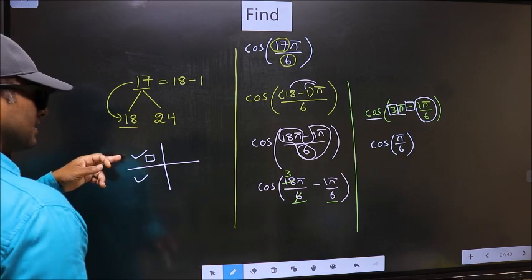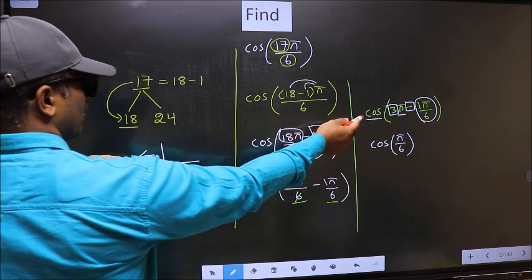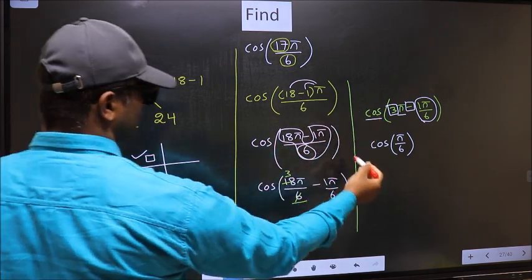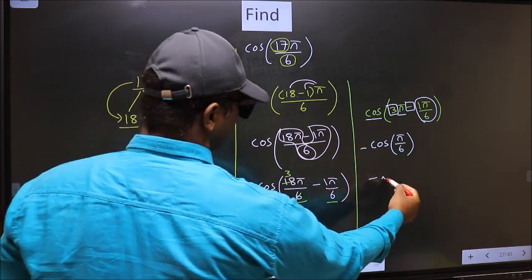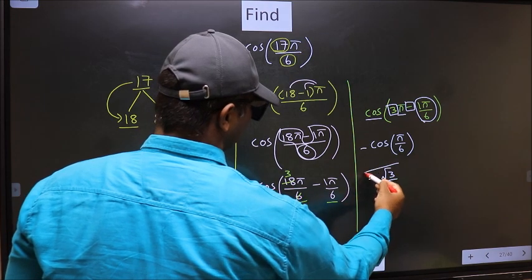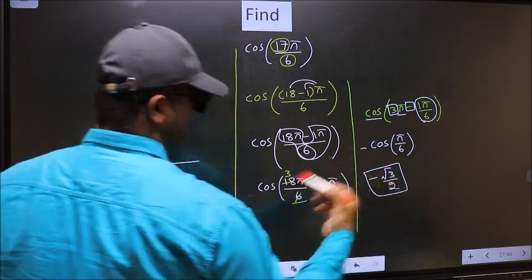And in the second quadrant, cos is negative. So you should put negative. So negative cos(π/6) is √3/2. This is our answer.